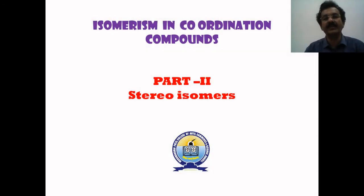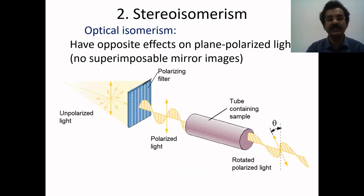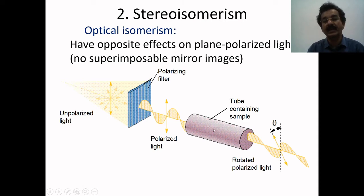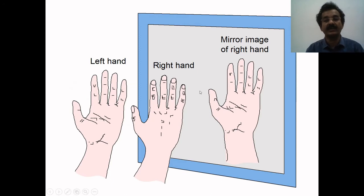Now I am going to discuss isomerism in coordination compounds Part 2: stereoisomerism. Stereoisomerism can be illustrated using a polarimeter. The internal layout of a polarimeter includes a polarizing filter which allows unpolarized light to pass through it, after which it becomes polarized light where scattering takes place in only two directions. That light is allowed to pass through a tube containing the sample material, and after passing through the sample, a certain rotation is observed. On the basis of the degree of rotation, one can understand what kind of rotation is present, and therefore the compound can exhibit the phenomenon of optical isomerism.